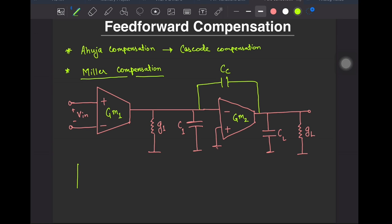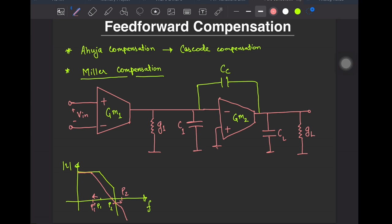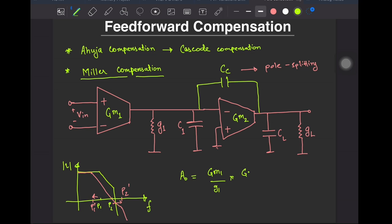Qualitatively, if the system had a Bode gain plot like this to begin with, we now wish to get something like this. The way we accomplish this is by putting a capacitor CC in negative feedback, because it turns out that we can make it look bigger, meaning that the pole associated with it would lie closer to the origin. Additionally, we also push the output pole further away from the origin. The gain is simply GM1 by G1 times GM2 over GL. The dominant pole P1 would lie approximately at G1 over CC times GM2 by GL, since the Miller capacitor is magnified by the gain of the second stage.